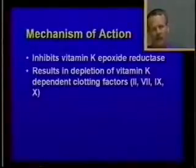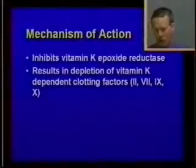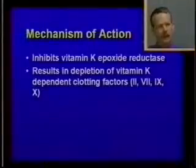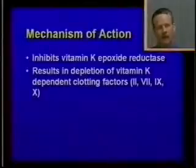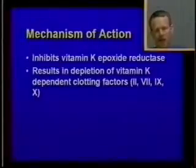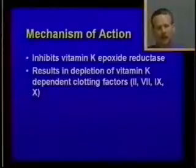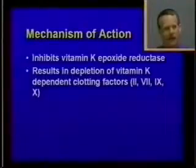All of these compounds act by inhibiting vitamin K epoxide reductase. When clotting factors 2, 7, 9, and 10 are formed in the liver, the inactive clotting factor is carboxylated using vitamin K hydroquinone as a cofactor. After this reaction, vitamin K is converted from a hydroquinone to an epoxide, which is inactive. Vitamin K epoxide reductase converts vitamin K epoxide back to vitamin K hydroquinone to allow continued synthesis of clotting factors. If this enzyme is inhibited, the result is depletion of vitamin K-dependent clotting factors 2, 7, 9, and 10, leading to ineffective clotting and excessive bleeding.